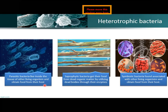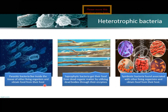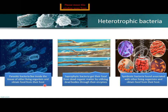Parasitic bacteria cause diseases as well. When they take advantage of our body, they do not provide any benefit - rather they cause diseases like typhoid. Typhoid is due to parasitic bacteria in the walls of our intestine, where they eat the walls of the intestine, leading to typhoid. Typhoid is actually a wound in our intestinal wall caused by parasitic bacteria eating up the intestinal walls.